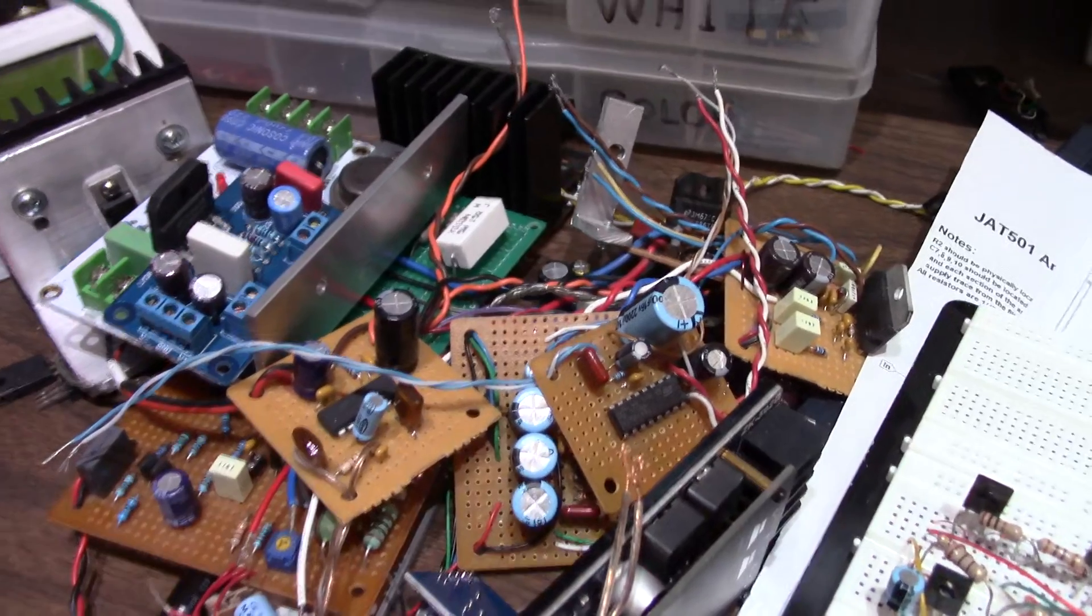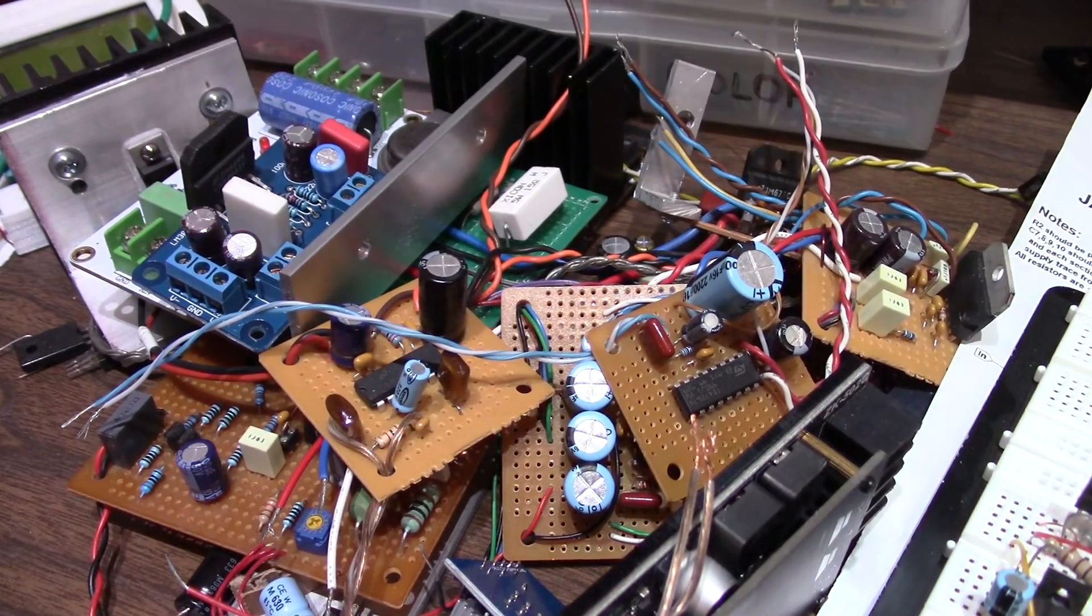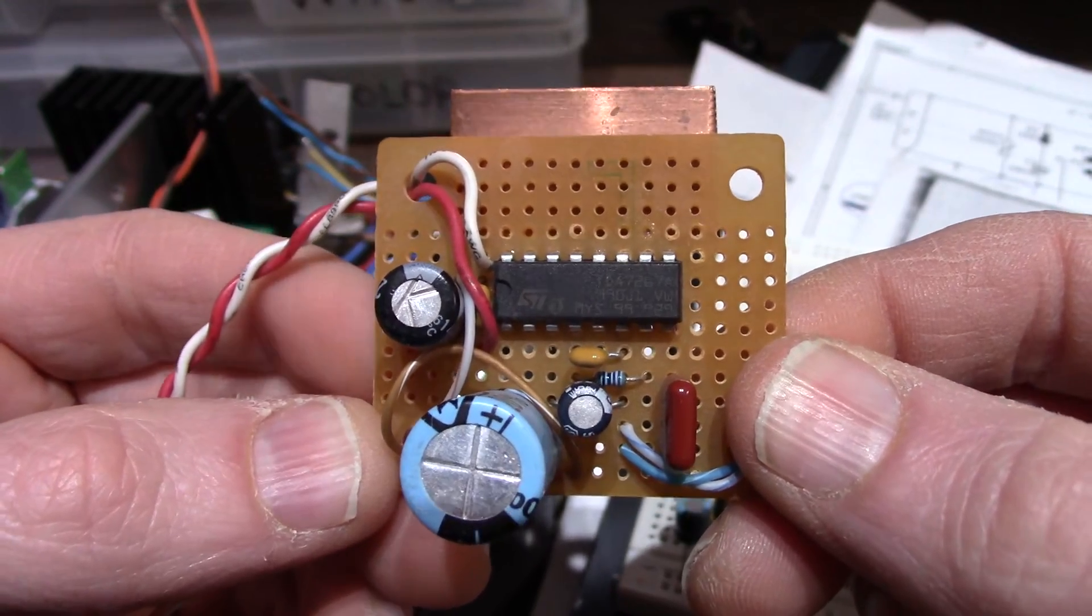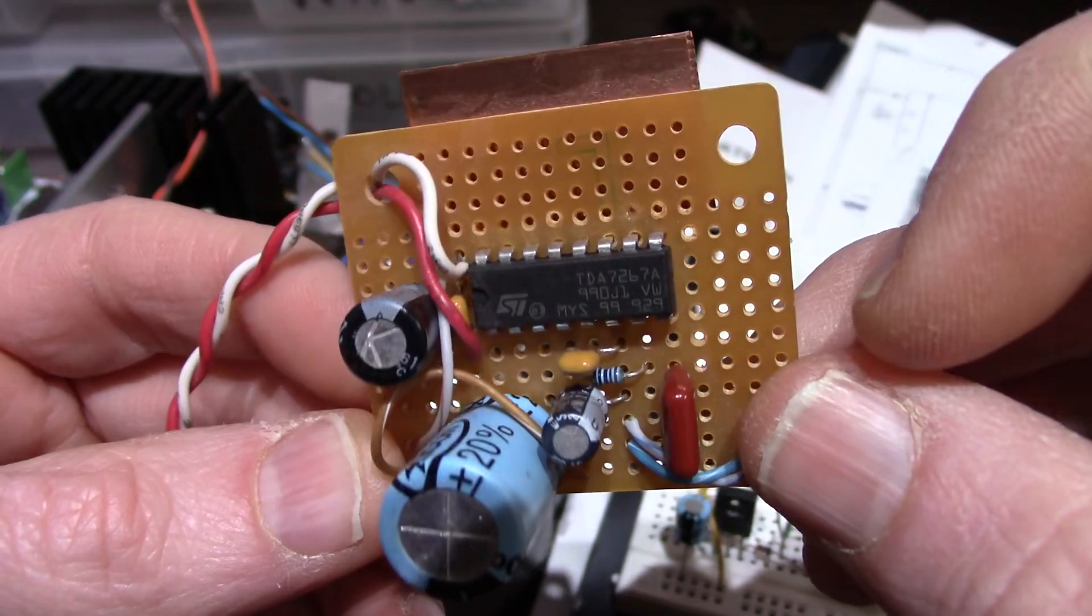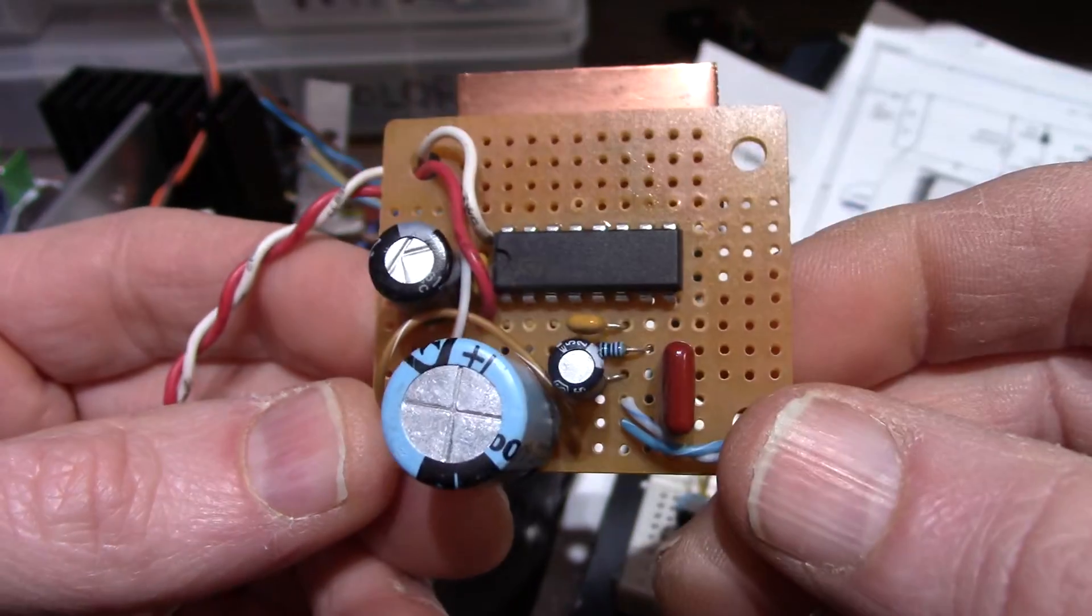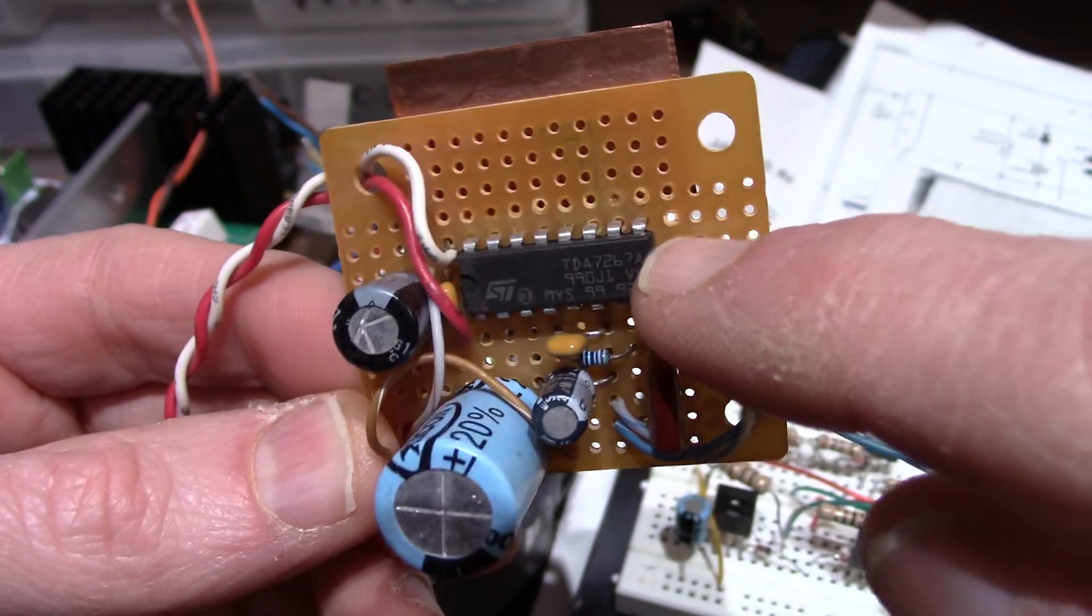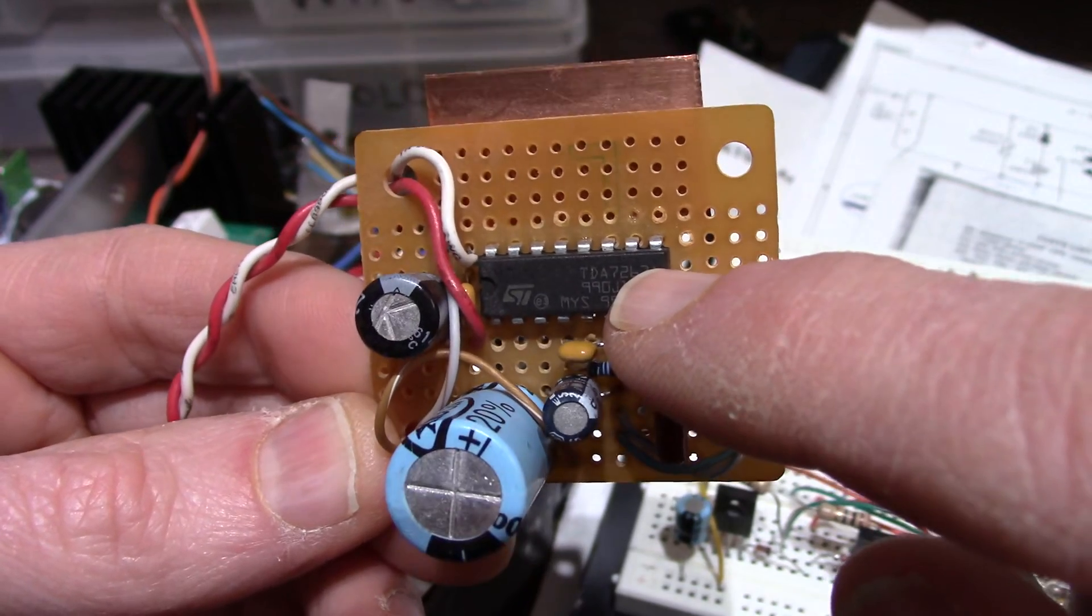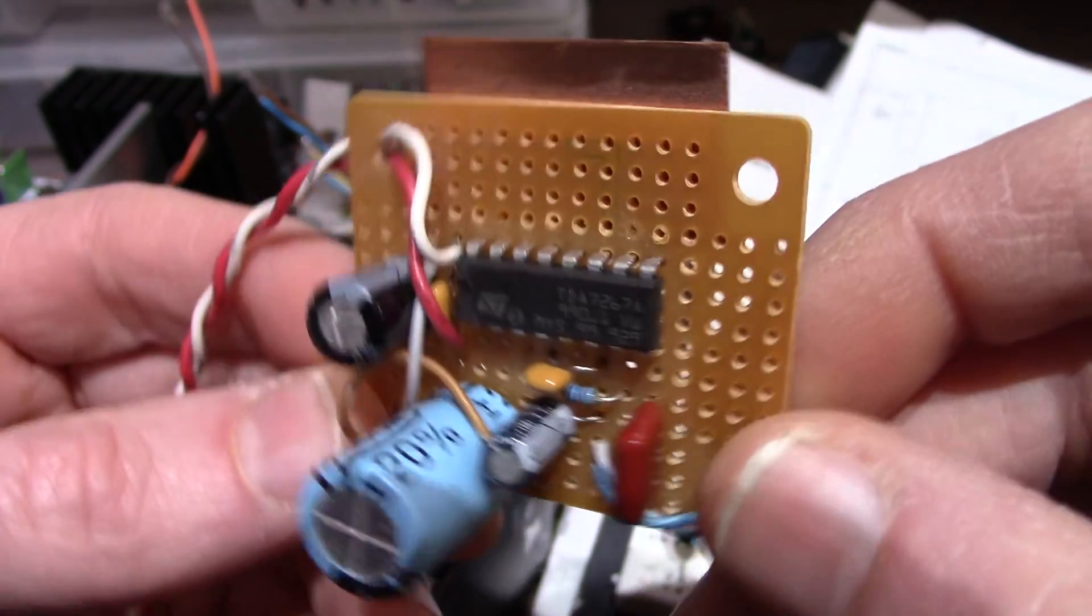But today we're going to look at a specific board here. And here it is, the TDA7267A. They also have an 8-pin dual inline package. This is the 16-pin dual inline package. Same chip inside, they just use different packaging.